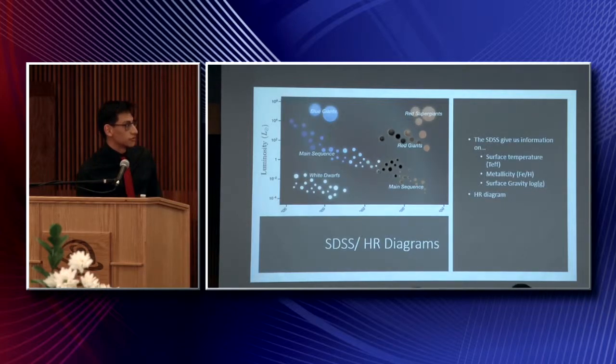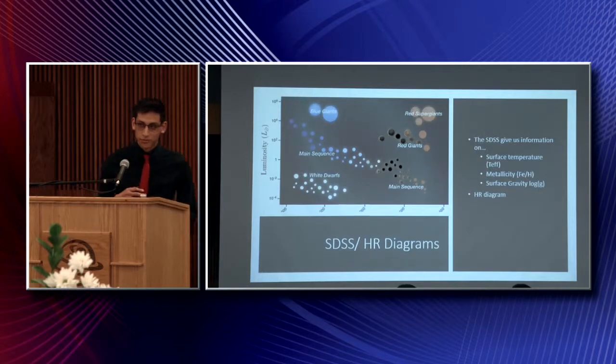Just like I mentioned before, the SDSS gives us certain parameters. But we will be looking at the surface temperature and metallicity and surface gravity. The surface temperature is just the temperature at the surface of the star, and the metallicity is the ratio of metal to hydrogen and helium.